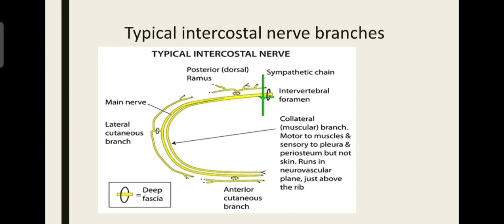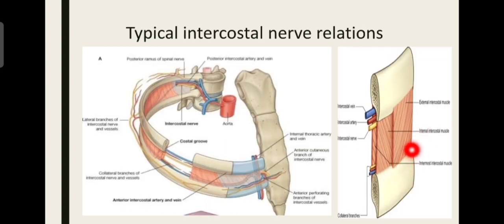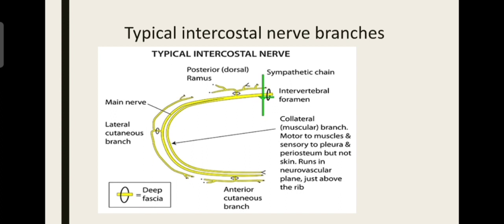The intercostal nerve is motor to muscles and sensory to the pleura and periosteum. It will carry sensory information such as pain from the pleura and periosteum. So this nerve is both motor and sensory. The skin, however, is not supplied by the main nerve — the skin is supplied by the cutaneous branches, that is the sympathetic branches and collateral branches.